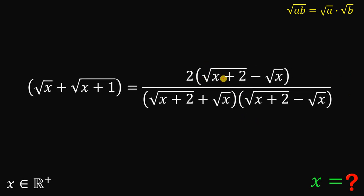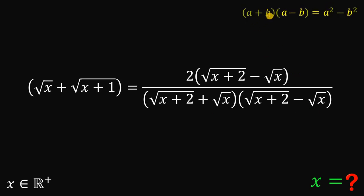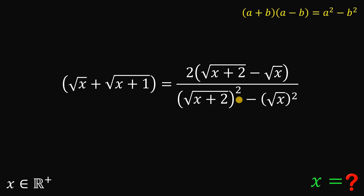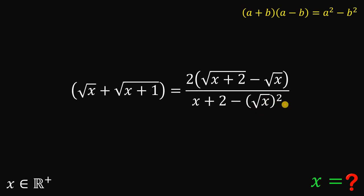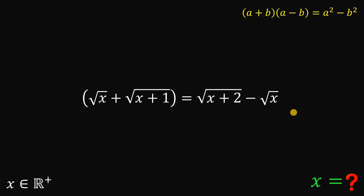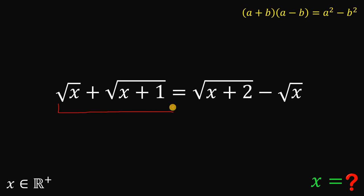Now let's multiply. We have 2 times the quantity square root of (x plus 2) minus square root of x, over square root of (x plus 2) plus square root of x multiplied by its conjugate square root of (x plus 2) minus square root of x. We will use the identity: (a plus b)(a minus b) equals a squared minus b squared. So our denominator becomes square root of (x plus 2) squared minus square root of x squared, which simplifies to (x plus 2) minus x. The x's cancel, leaving 2. And 2 divided by 2 is just 1. Therefore, our equation becomes: square root of x plus square root of (x plus 1) equals square root of (x plus 2) minus square root of x.